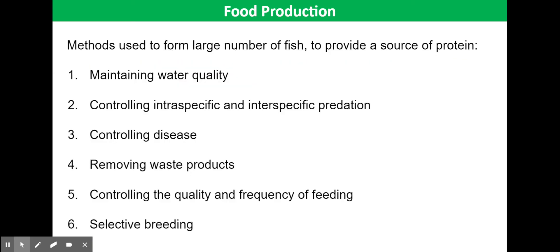You need to understand the key methods used to farm large numbers of fish to provide a source of protein. These methods include maintaining water quality, controlling intra- and inter-specific predation, controlling disease, removing waste products, controlling the quality and frequency of feeding, and selective breeding. We're going to go through each of these briefly in this video tutorial.